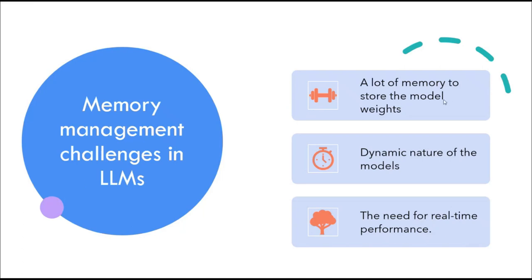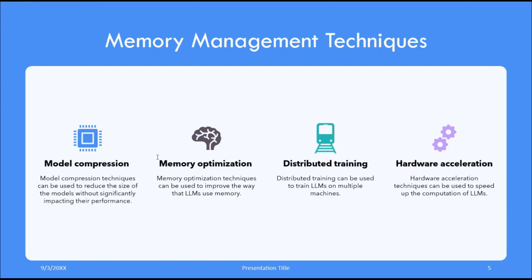We are going to talk about some techniques useful for efficient memory utilization. Number one is model compression — a technique that can reduce the size of a model without significantly impacting performance, freeing up memory and making models more efficient to deploy and use. Then we have model optimization, which can improve the way LLMs use memory through techniques such as caching, garbage collection, and memory sharing.